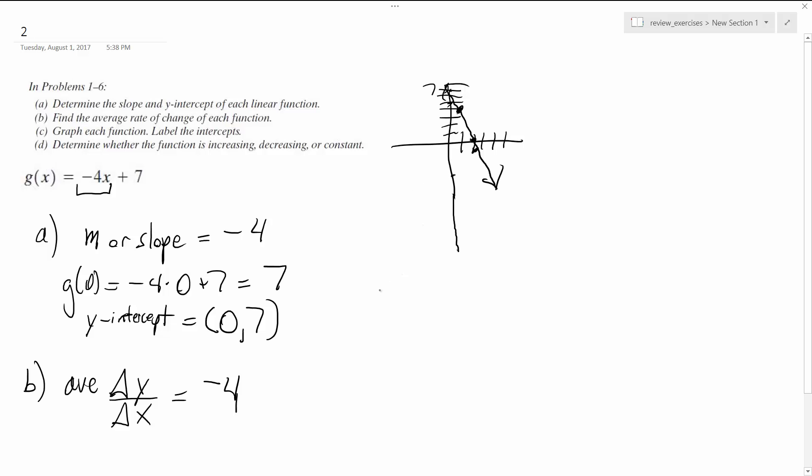And then, so the intercepts are going to be 0 comma 7, and then 1.75 comma 0. Because you multiply negative 4 times 1.75, you get negative 7, and it cancels out, and that's where the x-intercept is.